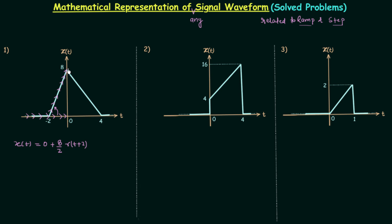This is the new flow of the signal. The important thing in this problem occurs at t equals 0: the signal is taking a downward turn, but we cannot have the turn directly because first we need to settle at some constant value, which is 8. So first the signal settles at constant value 8, then takes the downward turn. For downward turn we take a negative sign. Since this angle and this angle are the same, the magnitude of the slope remains 8 by 2, and the ramp signal will be r(t-0).